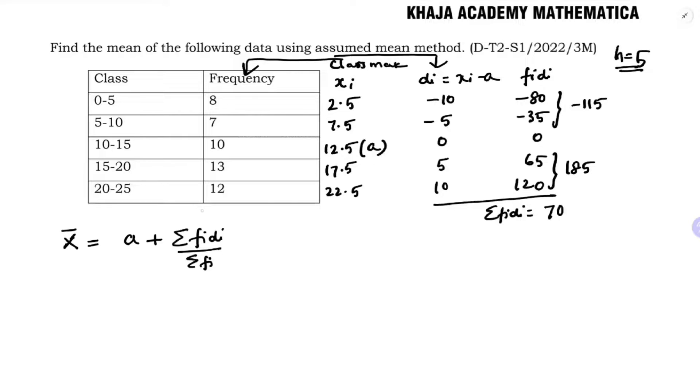Now sigma fi, summation of fi, total frequency. We need to add: 8 plus 7 plus 10 plus 13 plus 12, so total is 50. a is 12.5, so mean equals 12.5 plus 70 by 50.